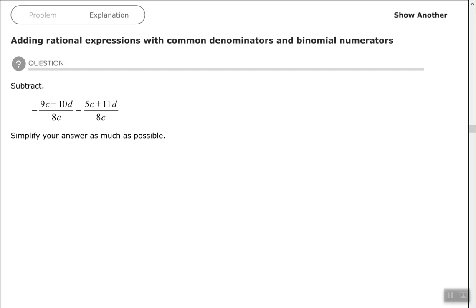Hey, good people, Arthur Morris here. I hope all is well. In this video we're going to look at adding rational expressions with common denominators and binomial numerators. If you have a common denominator, then you want to write the numerator over your one common denominator.